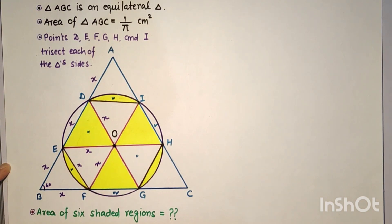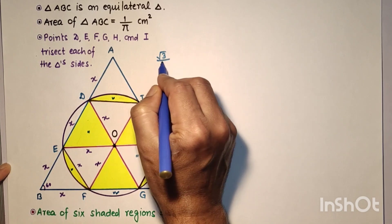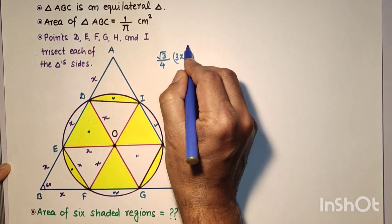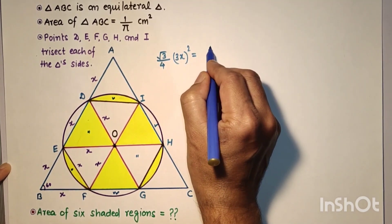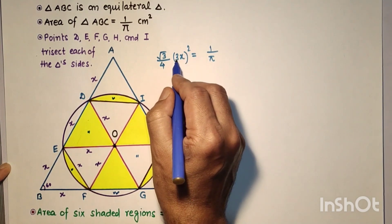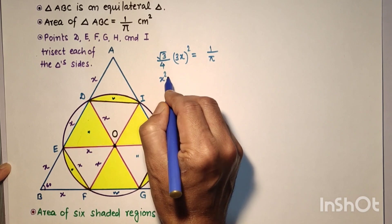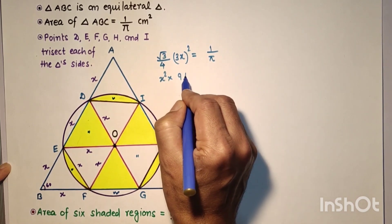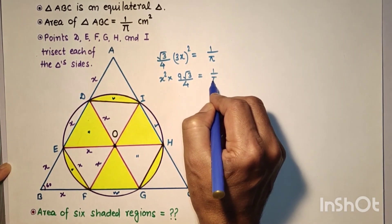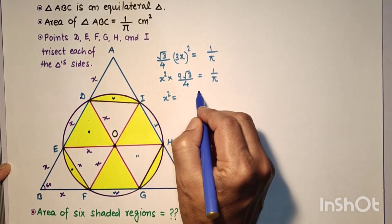for the area of an equilateral triangle, which is √3/4 × side². Here side is 3X, which equals 1/π. Simplifying: (9√3/4)X² = 1/π, therefore X² = 4/(9√3π).